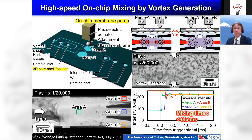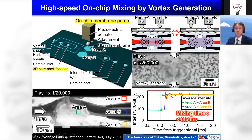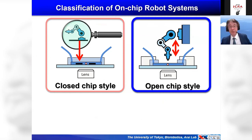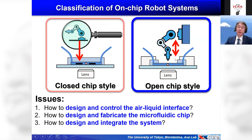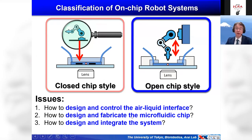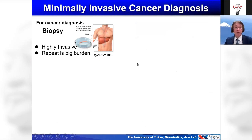Next, I talk about another type of on-chip robot system: open chip style. In this case, part of the microfluidic chip is made open. There are several issues: how to design and control the air-liquid interface, how to design the microfluidic chip, and of course the integration of the system.